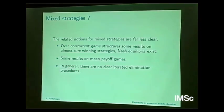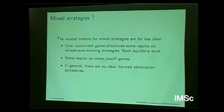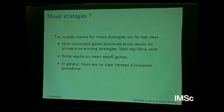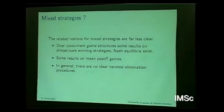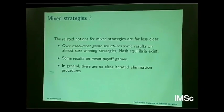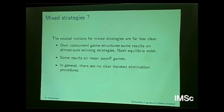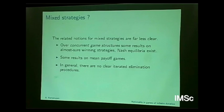What about mixed strategies? The related notions for mixed strategies for games over graphs are far less clear. Over concurrent game structures, some results exist on almost sure winning strategies. Existence of Nash equilibria is shown. Krishnendu Chatterjee and co-authors have developed a whole body of work. There are some results on mean payoff games. But in general there are no clear iterated domination procedures, and nothing analogous to Pearce's theorem exists for these, at least that I know of.